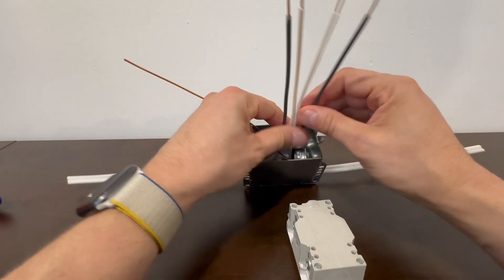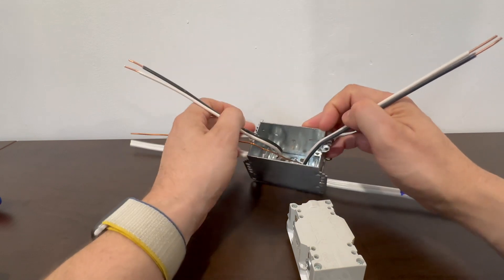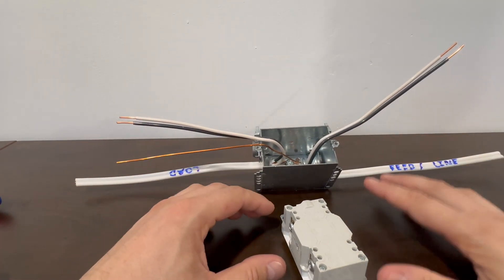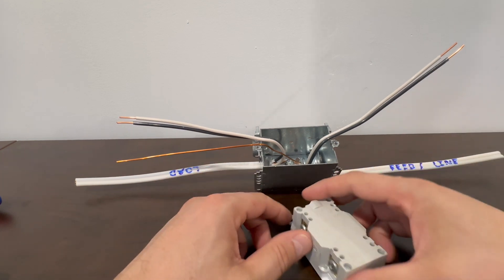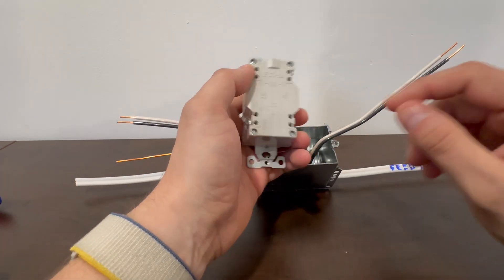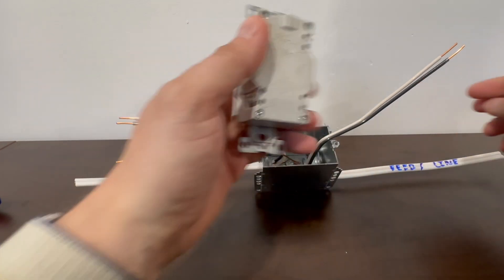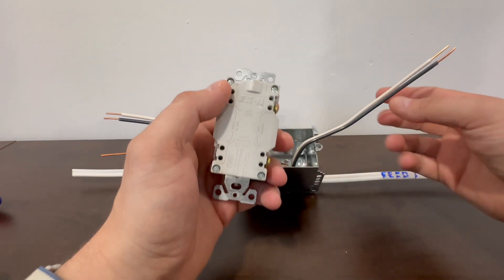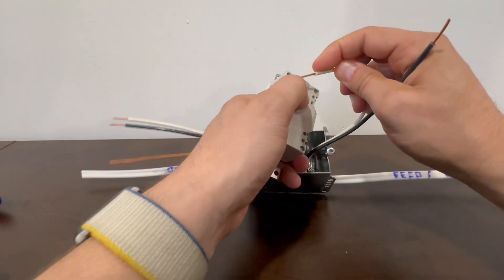So what we're going to do is we're going to separate our line side from our load side, make sure they're completely separated so you don't get them mixed up. The GFI, if you do get them mixed up, the GFCI will not work. What I tend to do is hook up my line side first. So right up here I see I have my line side and this is my line side. That would be coming from my breaker panel or power source.